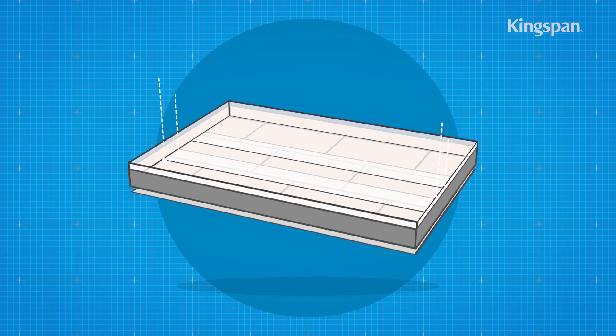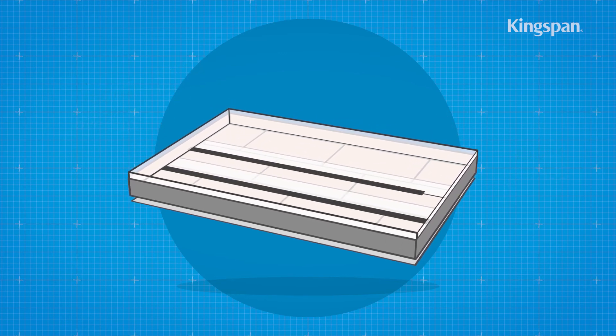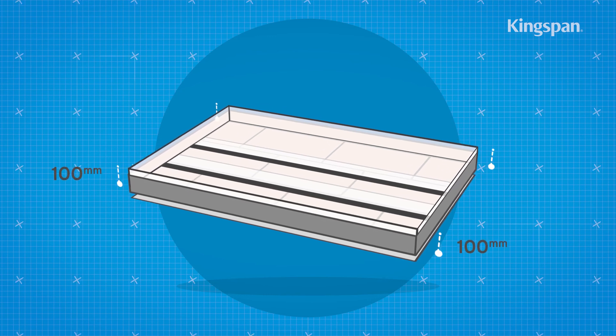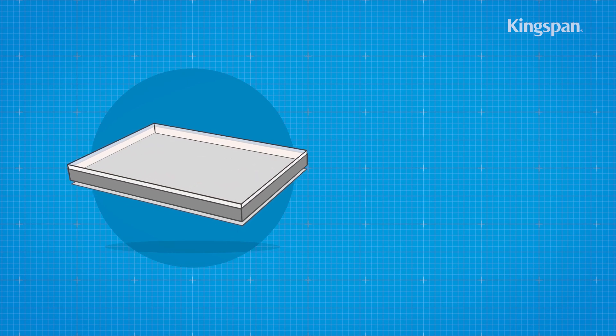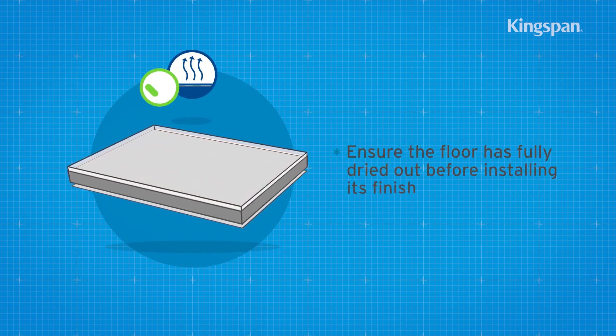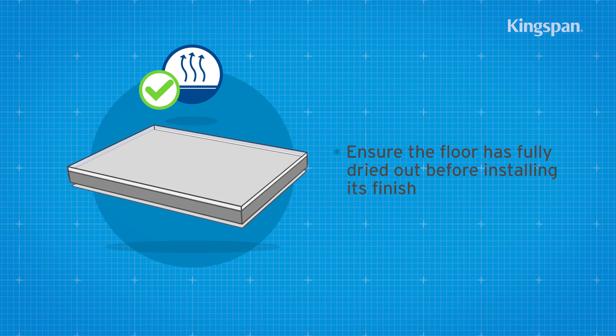Ensure the polythene sheet has 150mm overlaps taped at the joints and is turned up 100mm at the walls. The subsequent installation of the concrete slab and screed is carried out in a manner similar to that for an uninsulated floor.